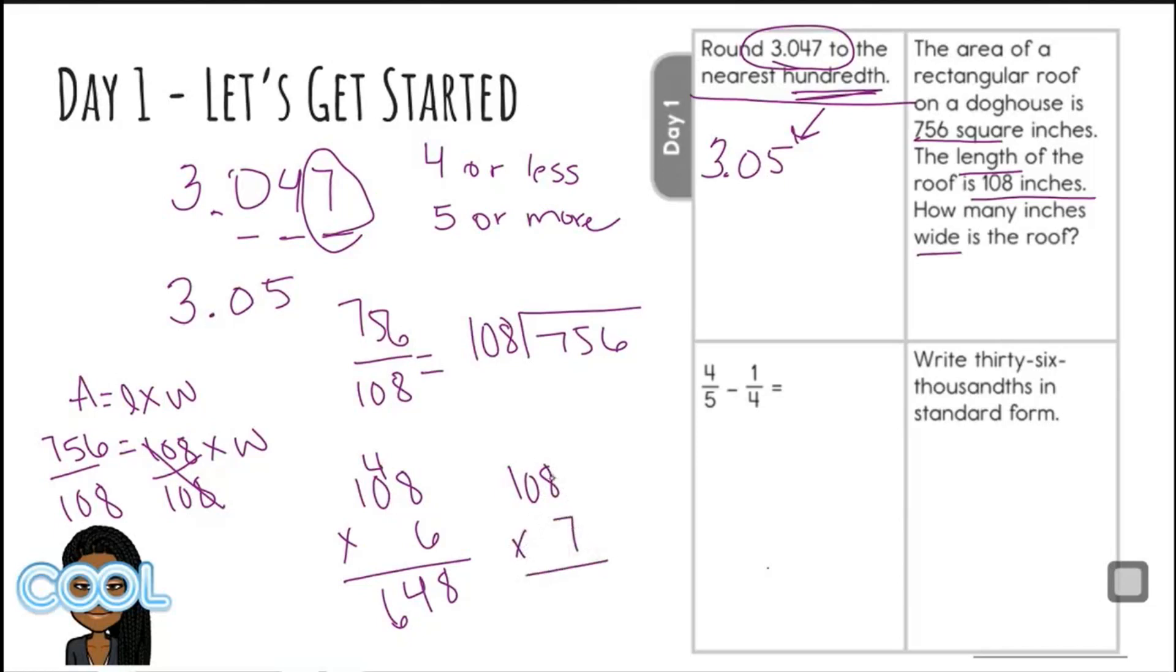I need to multiply again. So 108 times 7. 7 times 8 is 56, carry the 5. 7 times 0 is 0 plus 5 is 5. And 7 times 1 is 7. That's exactly what I needed. So 108 goes into 756 how many times? Seven times. So the width of the roof, we could say W equals 7.